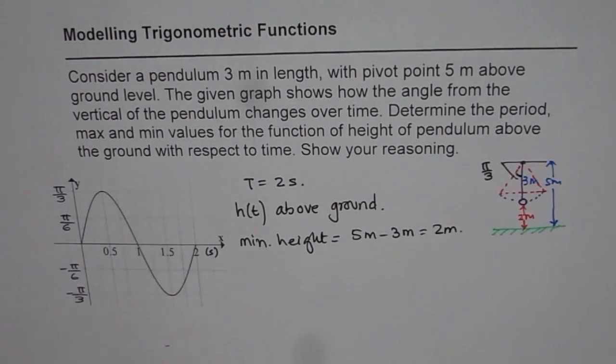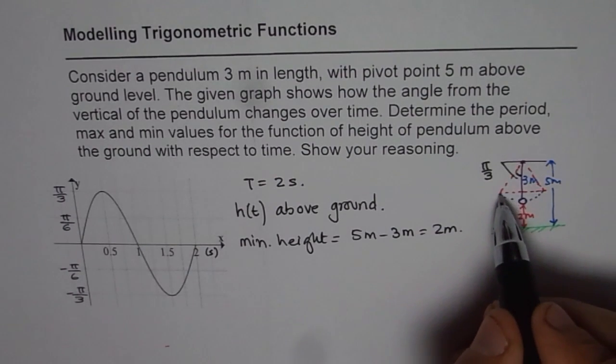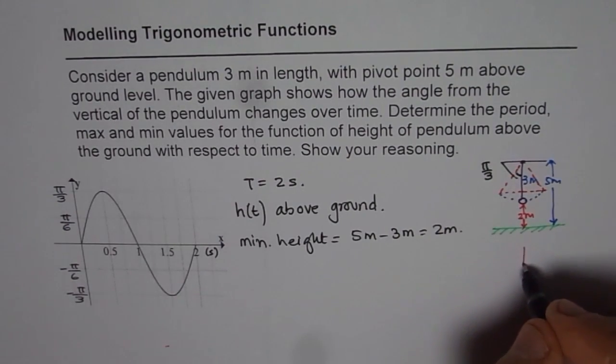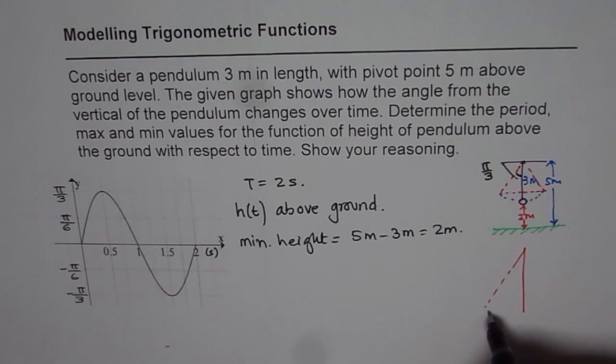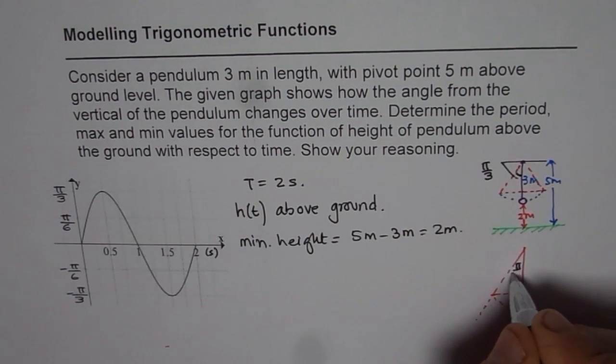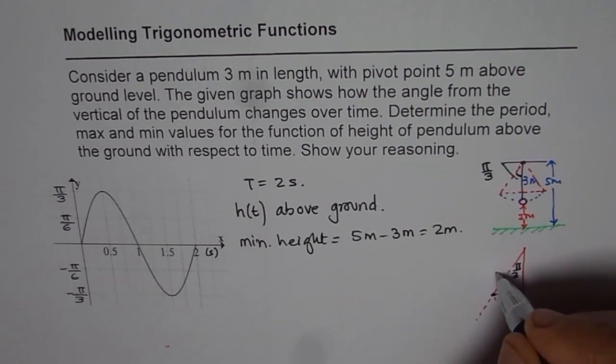Now we need to calculate maximum height. Maximum height will occur when this angle is pi by three. So basically let me draw a bigger triangle here to explain you. So this is our triangle. Now it goes kind of like this, so we get this position, where the angle given to us is pi by three. But the length of the pendulum will be three meters.